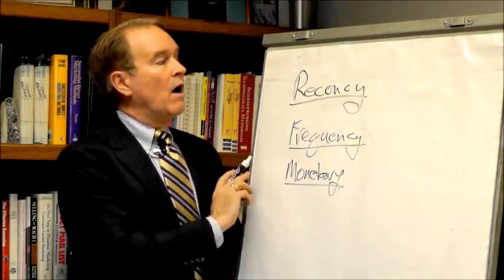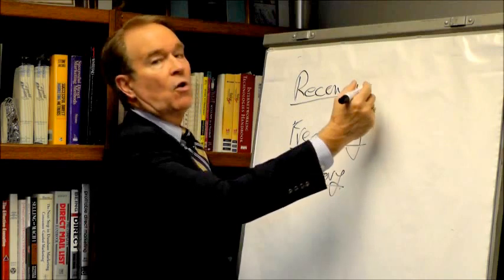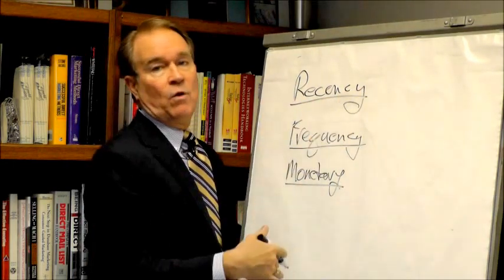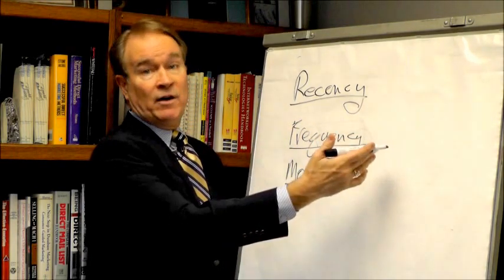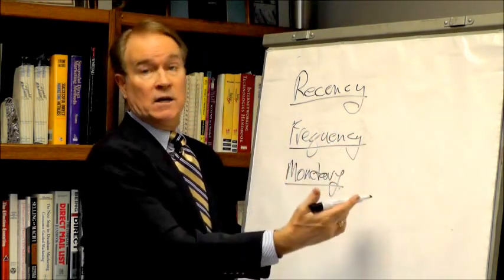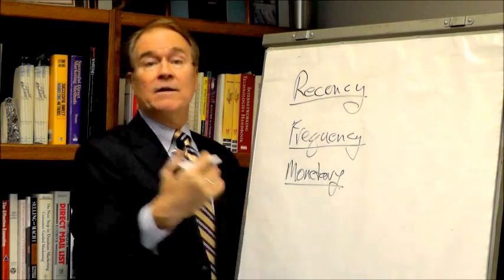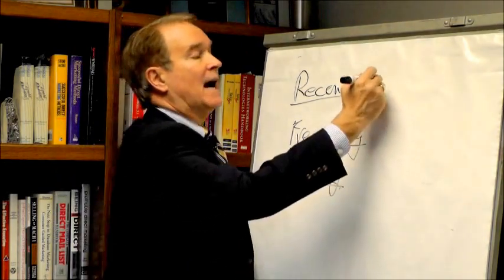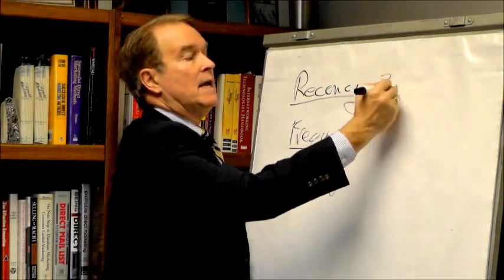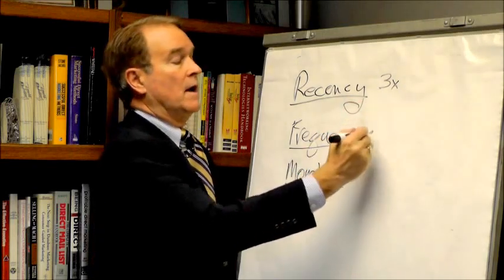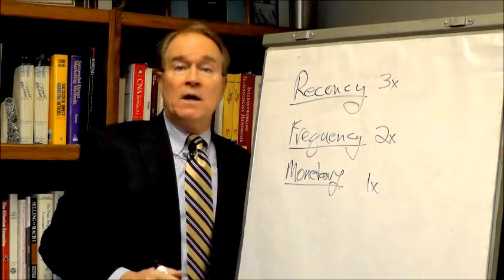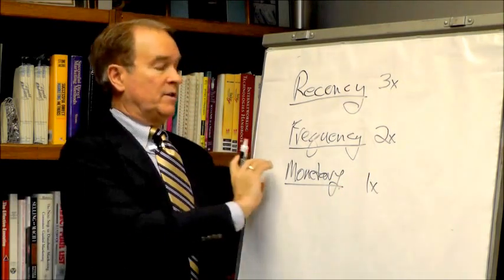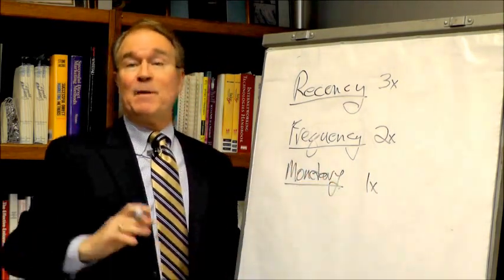For the moment we're gonna say recency, frequency, monetary. What oftentimes people will do is they'll take the score - let's say we'll do five, four, three, two, one for the very recent are five, the ones who spent the most often are fives, and the most money is a five, whatever that scale is. But these guys oftentimes will be three times the score, these guys will be two times, and these guys will be one times.